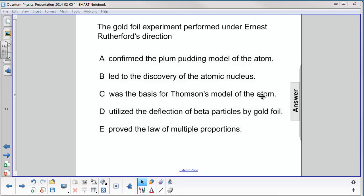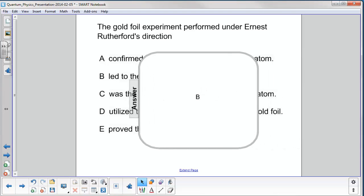And again, it disproved Thomson's model of the atom. It used alpha particles, not beta particles. So the answer here is B: it led to the discovery of the atomic nucleus.